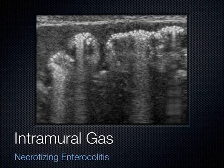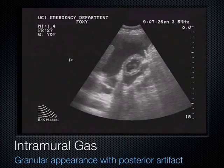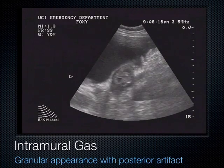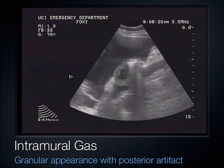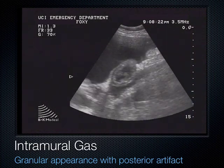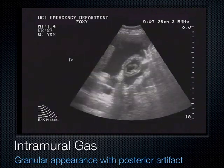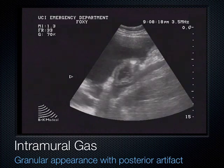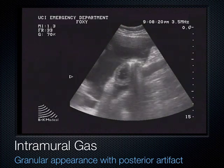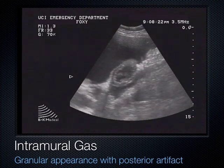Here is more intramural gas in a patient with a very severe condition called necrotizing enterocolitis. In another patient with ascites — fluid that builds up when the liver fails — you can actually see the intestine very well because the ascitic fluid outlines the loops of bowel. And here we can see intramural gas building up inside the bowel wall.